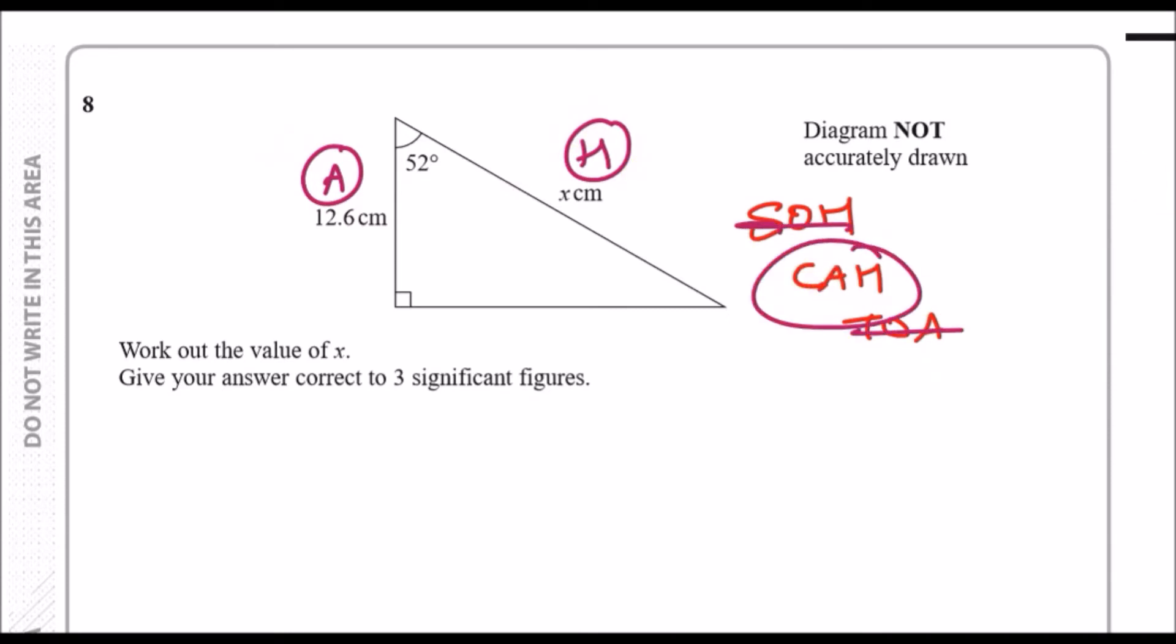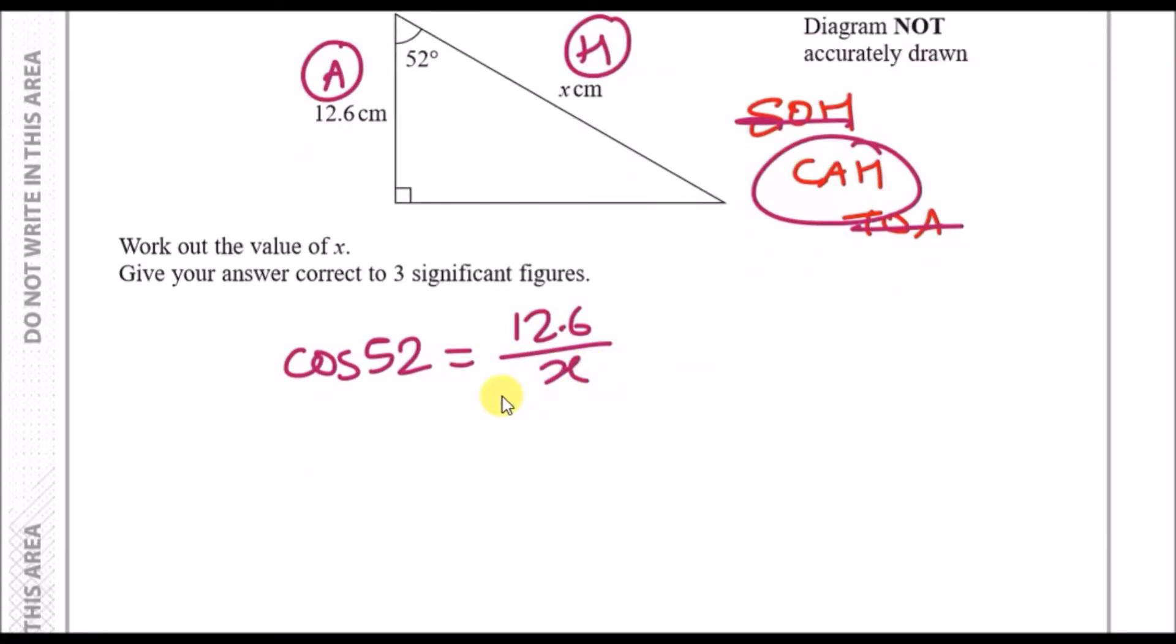We look at SOH CAH TOA. Which one has A and H? It's CAH, so cross out these two. We're going to use CAH. CAH means cosine of the angle, so cos of 52 equals adjacent over hypotenuse, A over H. So A which is 12.6 over hypotenuse which is x. Now just rearrange this algebraic equation and make x the subject. Clear the fraction, times x across and divide cos 52.